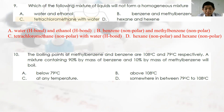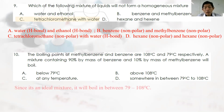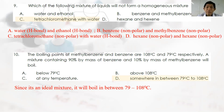Question 10: Boiling points of methylbenzene and benzene are 108°C and 79°C respectively. A mixture of 90% benzene and 10% methylbenzene will boil between these values. This mixture is an ideal mixture. To determine if a mixture is ideal: the components must have the same functional group, and the difference in carbon number in their homologous series should not be more than 2 — usually 1.